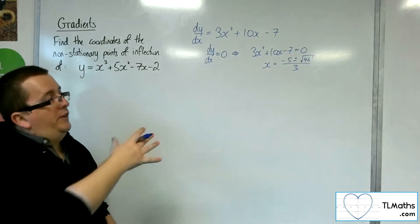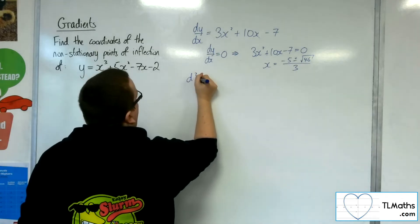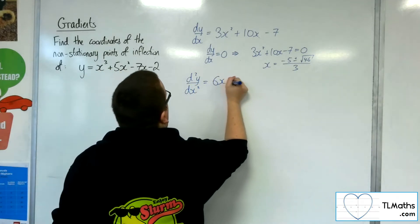The stationary points exist at those two points. Now go on to the second derivative, d2y by dx squared. That would be 6x plus 10.